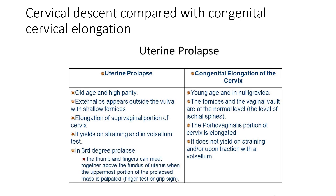Comparing cervical descent with congenital cervical elongation: uterine prolapse or cervical descent mostly presents in older females with high parity, whereas congenital elongation occurs in young females who are mostly nulligravida and nullipara, and they mostly present with primary infertility. In cervical descent, the external os appears outside the vulva with shallow fornices. In congenital elongation, the fornices and vaginal vault are at a normal level, with deep fornices because the uterus and supra-vaginal part are at their normal position.